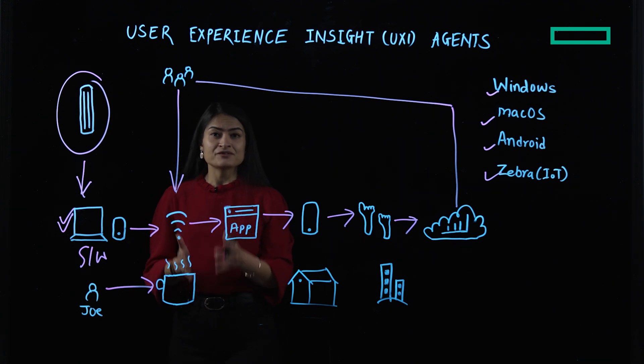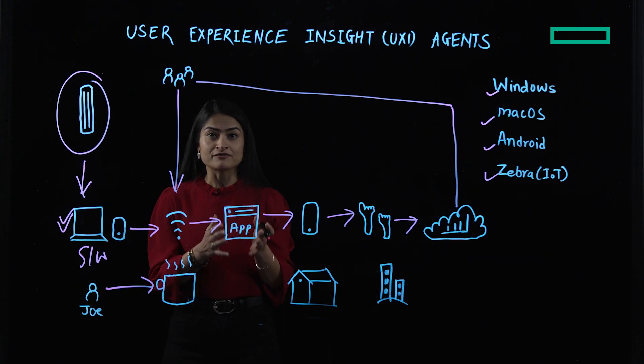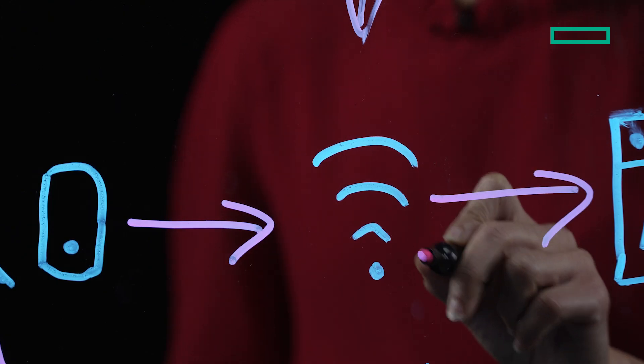Good news for us, we have UXI agent running on his device. And what we saw is Joe is connected to the coffee shop's Wi-Fi network, which has a very weak signal strength. So we suggested Joe to either connect to a better Wi-Fi or try to turn his video off.